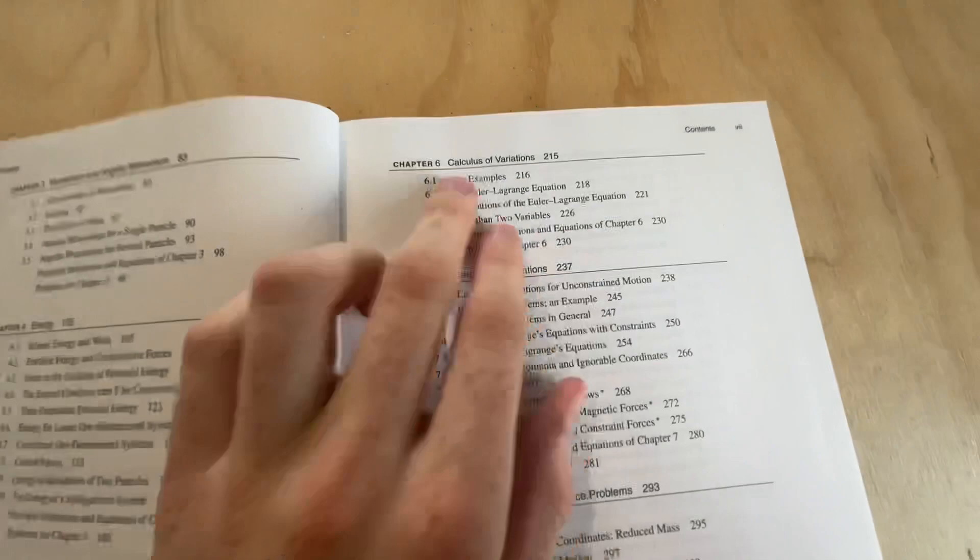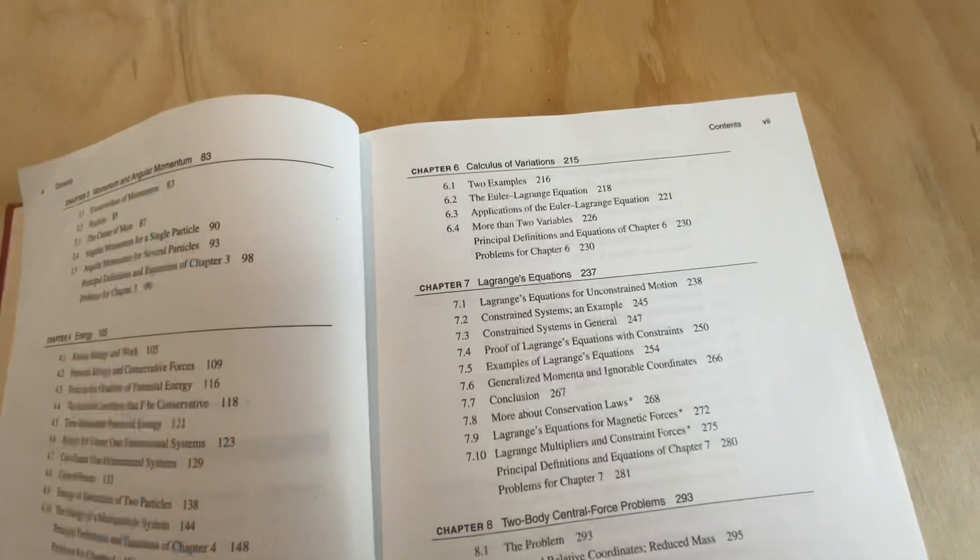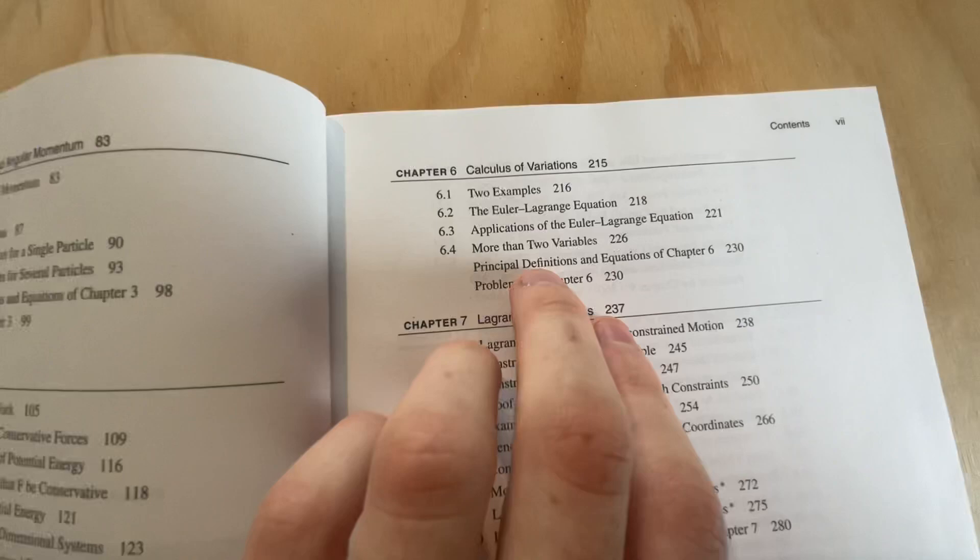Chapter six has a whole chapter dedicated to calculus of variations. I thought this was really, really good. Taylor does an excellent job of deriving the Euler-Lagrange equations. I think it's really good, easy to follow, and just really intuitive, makes sense. He explains it really well. All the topics in here, we've got, of course, the Euler-Lagrange equation, some applications, and it even talks about things like geodesics and Fermat's principle.